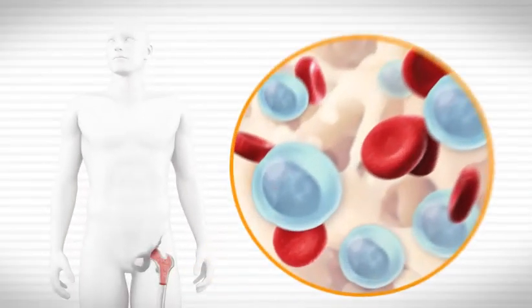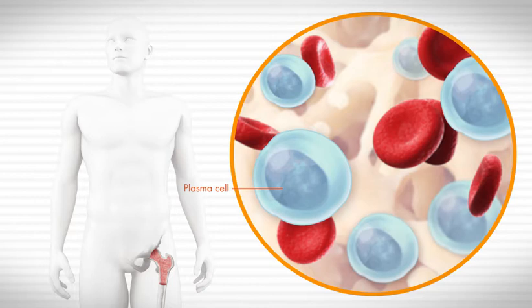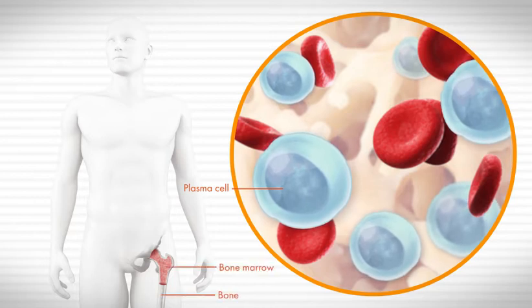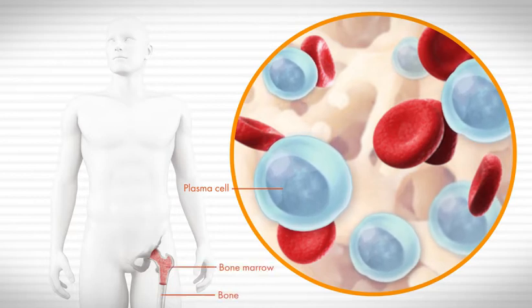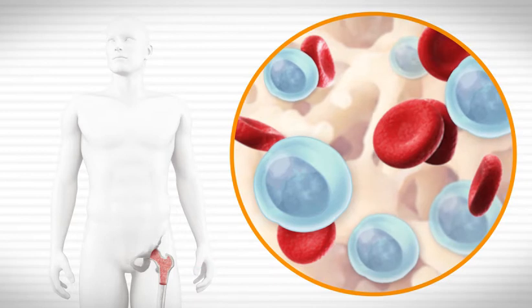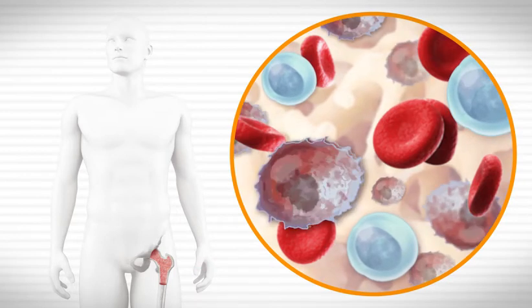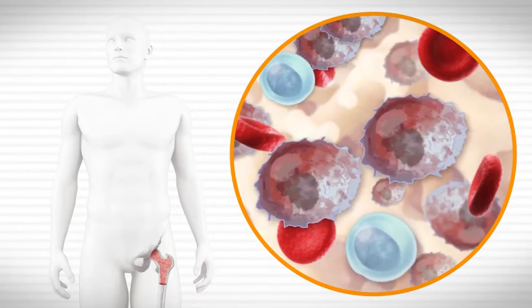Multiple myeloma is a cancer of the plasma cells, which are a type of blood cell produced in the bone marrow. In multiple myeloma, cancerous plasma cells, that is myeloma cells, grow so fast that they crowd out normal plasma cells.